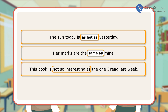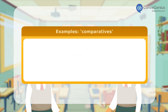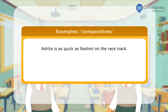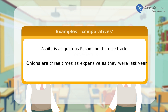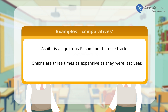In the last sentence, 'not so interesting as' is the comparative form used. This manner of comparison is used in negative sentences only — it is not used in positive sentences or questions. Here are a few more examples: Ashita is as quick as Rashmi on the racetrack. Onions are three times as expensive as they were last year.